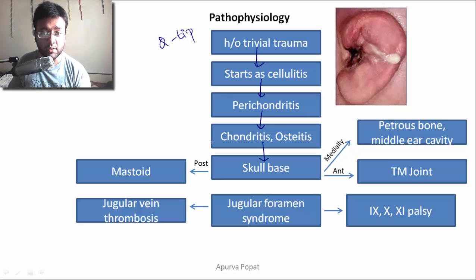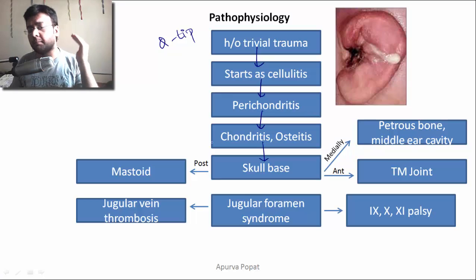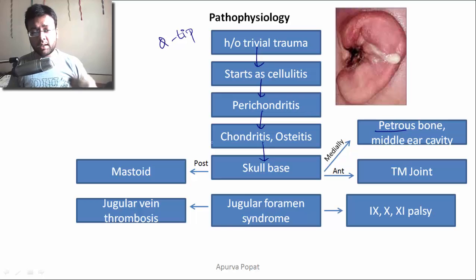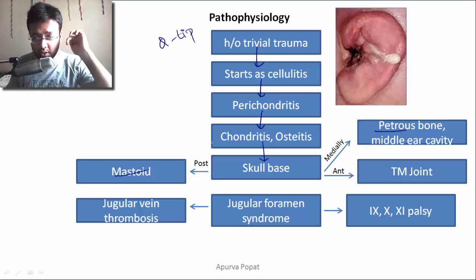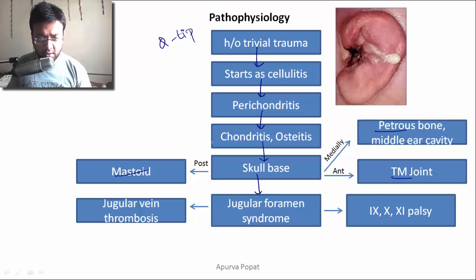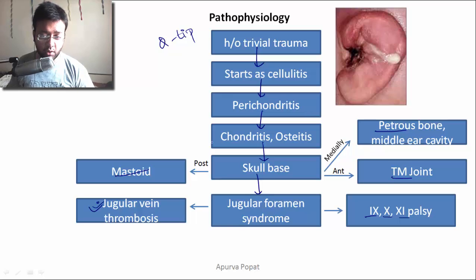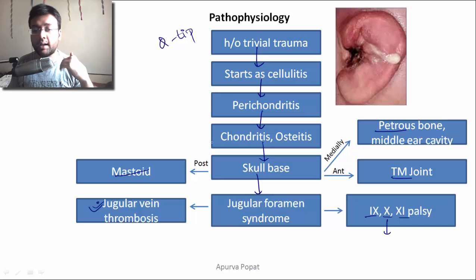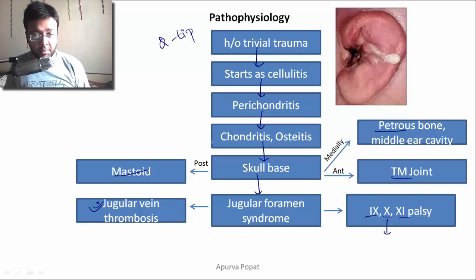From chondritis it progresses to osteitis, then to the skull base. From the skull base it spreads medially into the middle ear cavity and petrous bone causing petrositis, posteriorly to the mastoid causing mastoiditis, anteriorly to the temporomandibular joint, and inferiorly to the jugular foramen. Involvement of the jugular foramen is called jugular foramen syndrome, which can paralyze the 9th, 10th, and 11th cranial nerves and cause jugular venous thrombosis. Once the 10th nerve is paralyzed, there is no gag reflex — the patient may aspirate and die of pneumonia. These dreaded complications are why the condition is called 'malignant.'